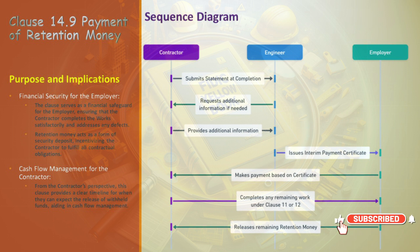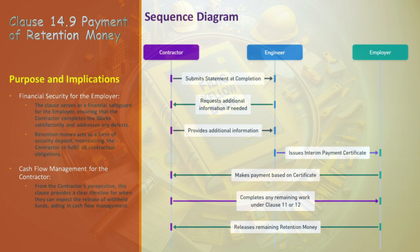The contractor provides the required extra details or clarification — an affirmation of their commitment to transparency and thoroughness. With all pieces in place, the engineer then issues an interim payment certificate to the employer, specifying the amount payable to the contractor. Acting on this certification, the employer processes the payment. In parallel, the contractor continues to complete any remaining work mandated under Clause 11 and Clause 12, crossing every T and dotting every I. The culmination of this process leads to the employer releasing the remaining retention money.